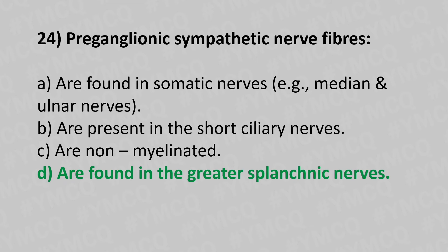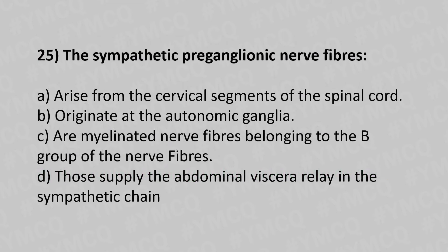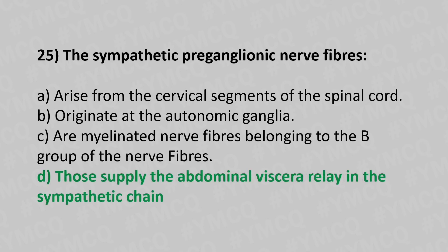Question 25: The sympathetic preganglionic nerve fibers — Option A: arise from the cervical segment of the spinal cord. Option B: originate at the autonomic ganglia. Option C: are myelinated nerve fibers belonging to the B group of nerve fibers. Option D: those supplying the abdominal viscera relay in the sympathetic chain. The answer is Option D — those supplying the abdominal viscera relay in the sympathetic chain.